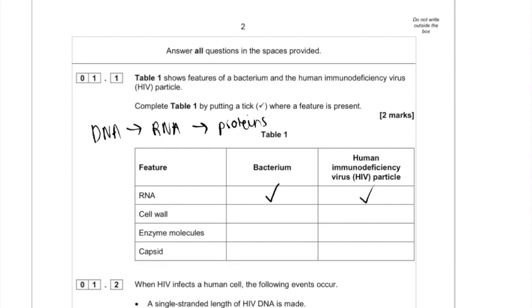Next: cell wall. This should be fairly obvious if you know your prokaryotic cell structure. A bacterium would have a cell wall, so we can put a tick there. But HIV doesn't have a cell wall. What about enzymes? A bacterium would have enzymes because they catalyse a wide range of reactions. A lot of people think because HIV doesn't have its own metabolism it might not have enzymes, but if you know how it replicates you should realise it needs to convert its own RNA into DNA so that it can be inserted into the host cell's DNA. This is the reverse of transcription. One of the most important enzymes in a HIV particle is called reverse transcriptase, and its function is to convert RNA back to DNA - it's reverse transcription. So we can put a tick there.